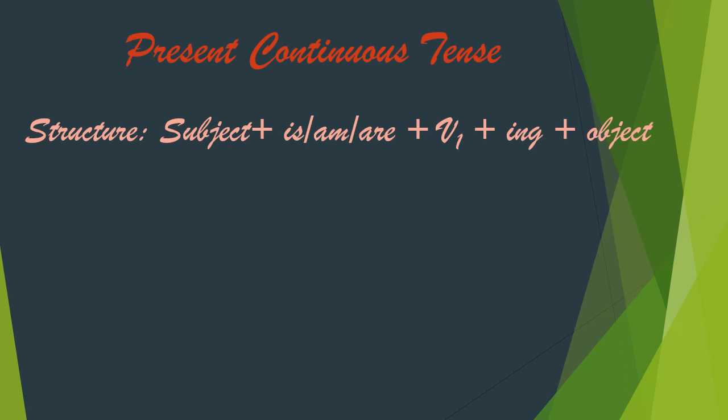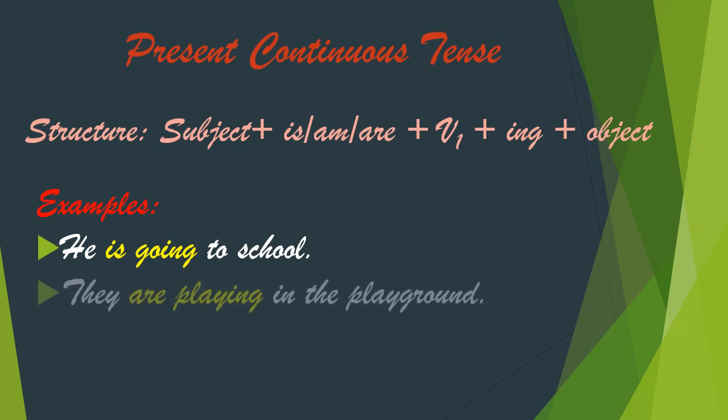Present continuous tense structure is: subject plus is/am/are plus first form of verb plus ING plus object. Let's understand this through two examples: 'He is going to school' and 'They are playing in the playground.' In the first example, 'is' is used for the singular subject 'he,' and in the second, 'are' is used for the plural subject 'they.' I emphasize the importance of writing ING as it depicts the continuity of action.